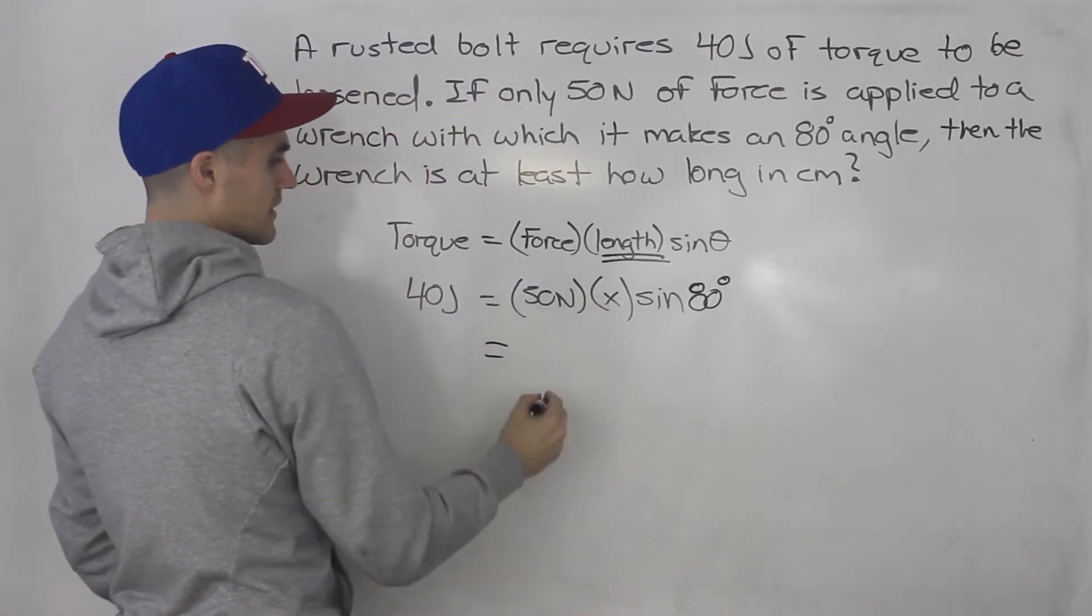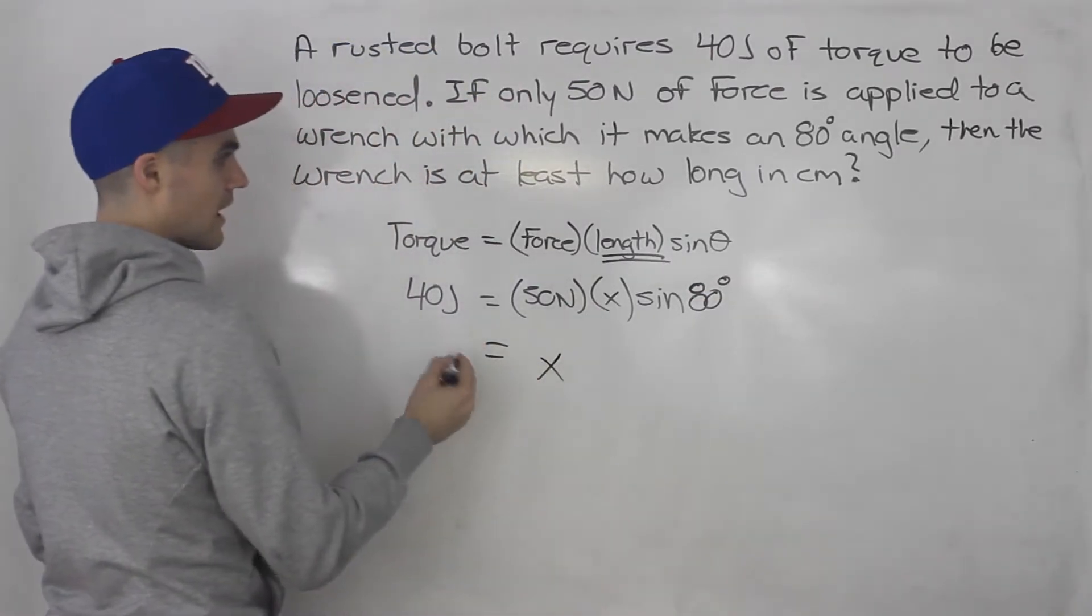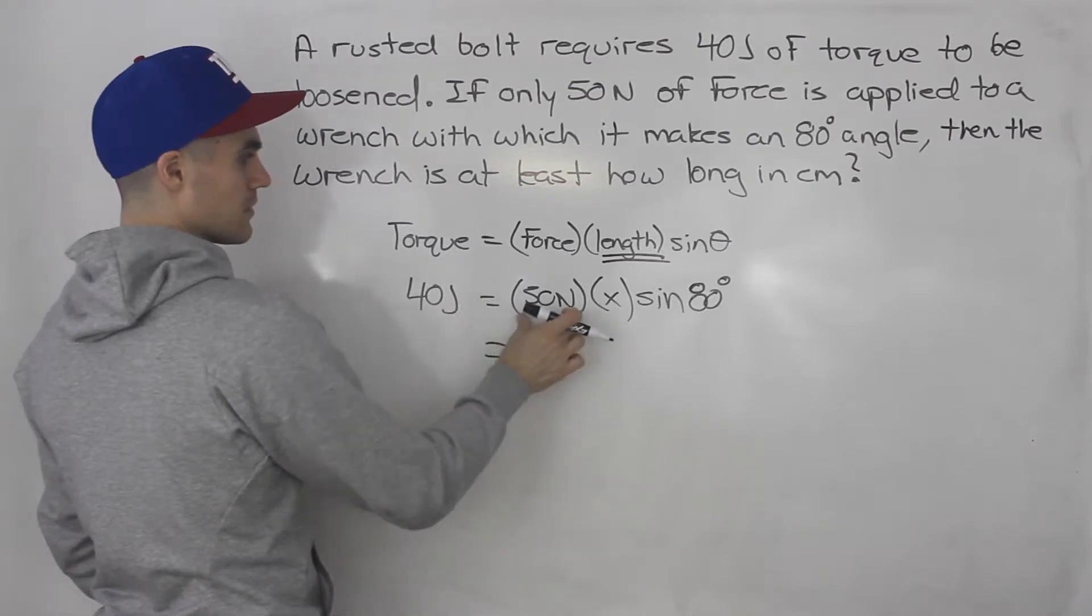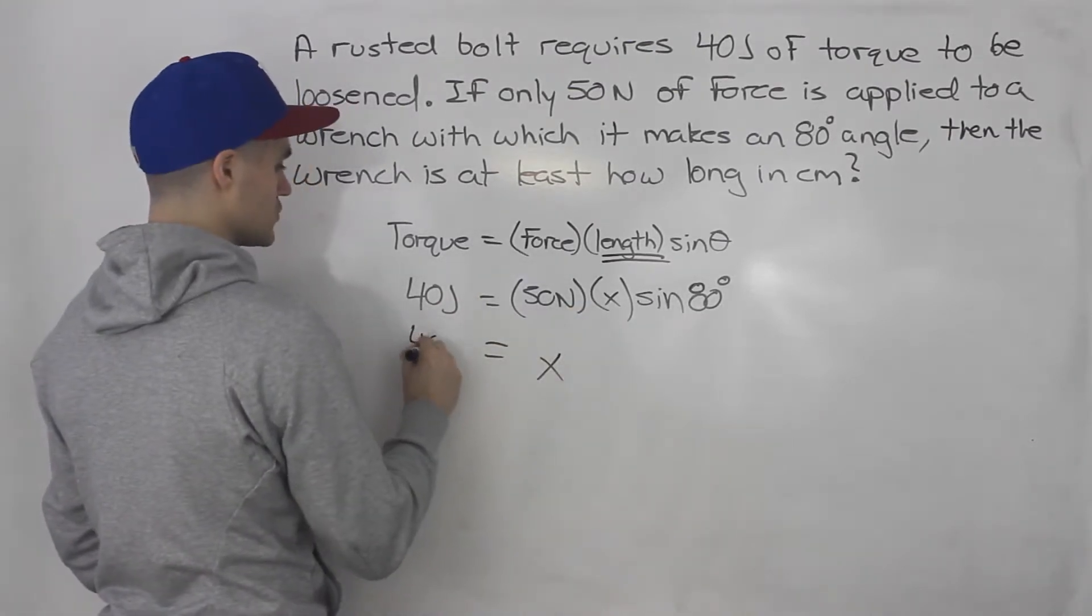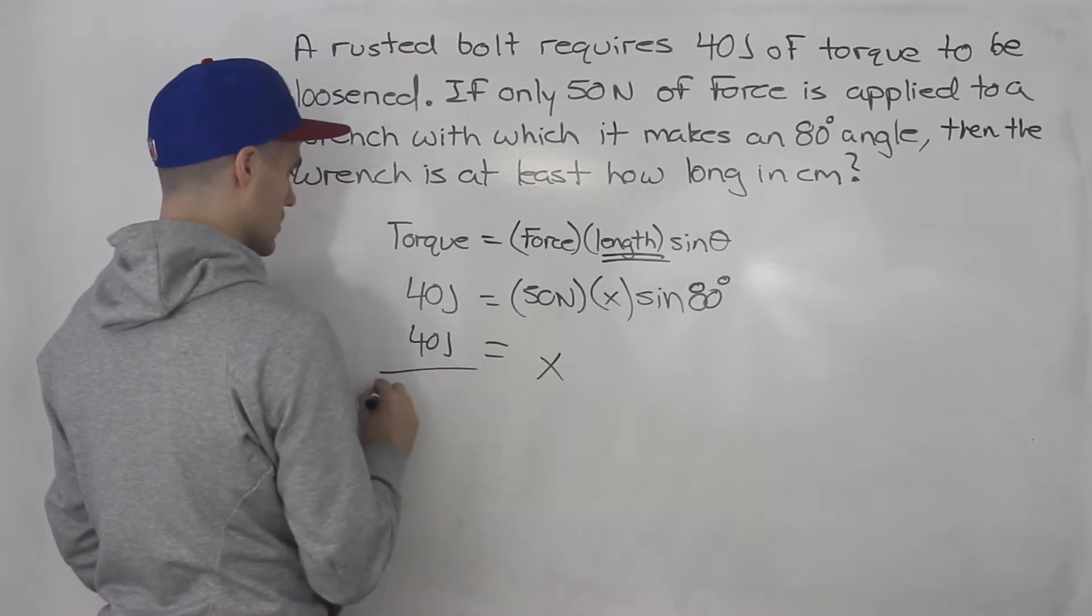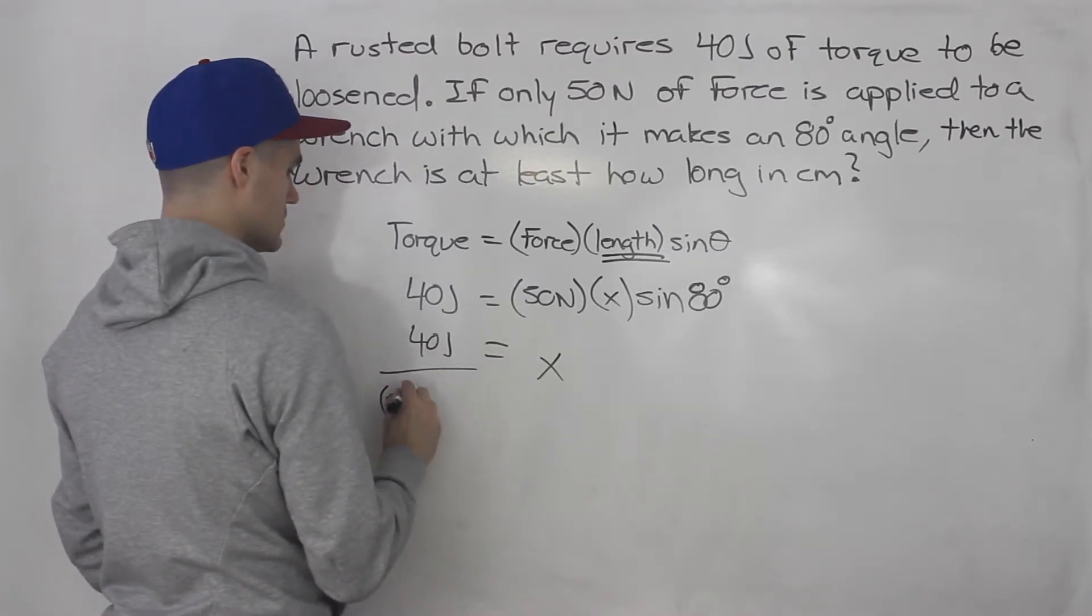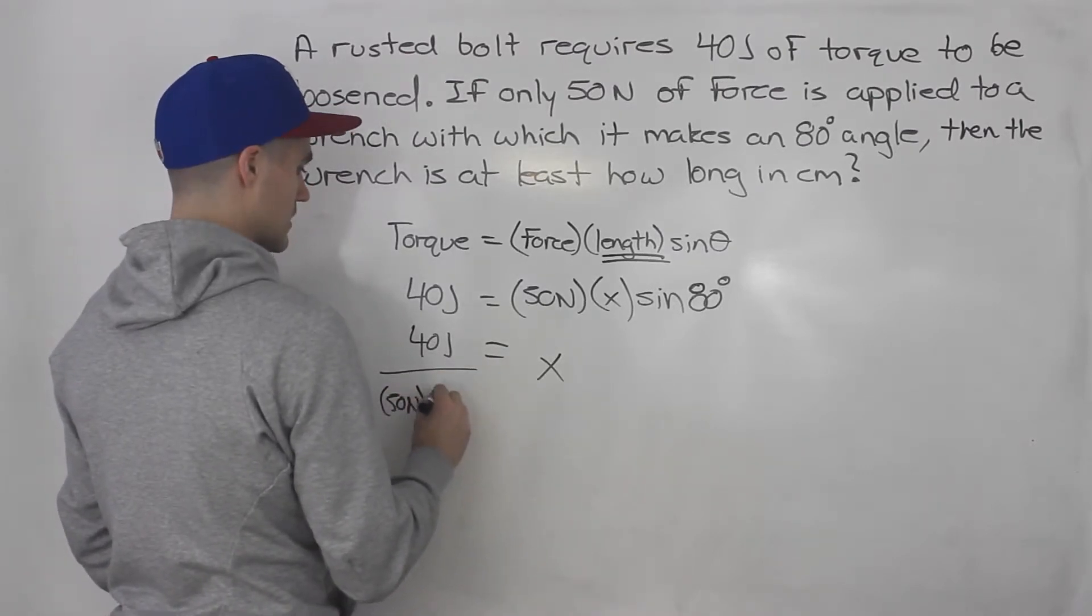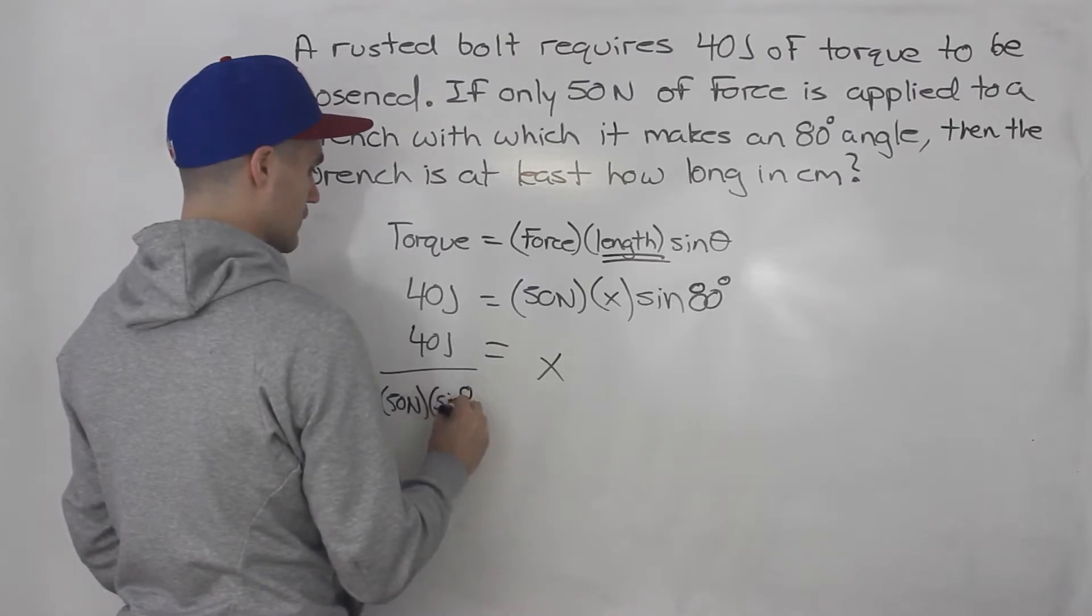To isolate for this x, we would just divide both sides by 50 newtons times sine of 80. So we got 40 joules over 50 newtons times sine of 80.